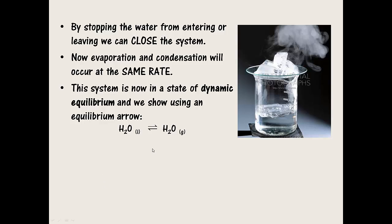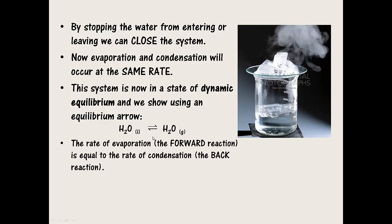So we use an equilibrium arrow shown here like this. The rate of evaporation, which is the forward reaction, is equal to the rate of condensation, which is the back reaction. The forward reaction is always the one referred to reading from left to right, and the back or reverse reaction is always the one that is read from right to left. From the outside looking in, there appears to be no change in the amount of water inside the beaker, even though both reactions are still occurring. This lack of observable change is the key to an equilibrium system.